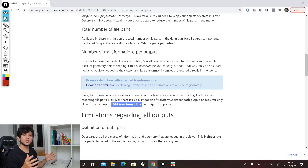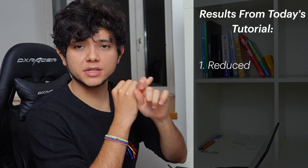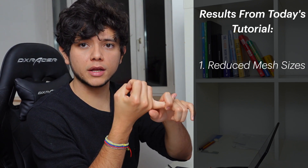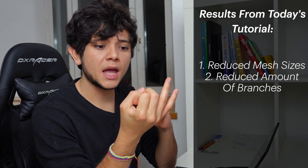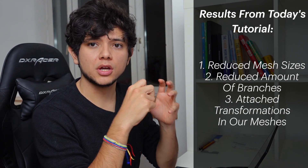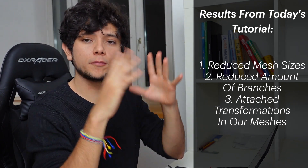And that's it for today's tutorial. We have reduced our mesh size to reduce the file size sent to our online application. We have reduced the amount of branches to reduce the amount of files sent to our online application. And we have attached transformations in our meshes so that we can send single small meshes instead of big complex meshes. I hope these tips and tricks help you in the creation of optimized online applications based on Grasshopper. If you have any questions or comments, please leave them down below. In the next optimization tutorial, we will look at how to display external geometry in our online applications to avoid them being sent to our Grasshopper definitions. So if you don't want to miss out this next tutorial, don't forget to subscribe. I will see you in the next tutorial.